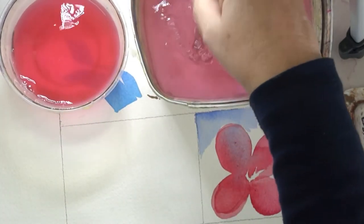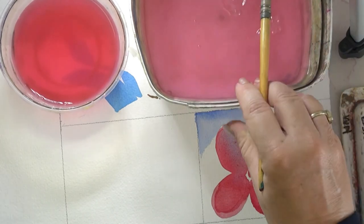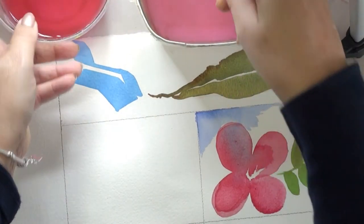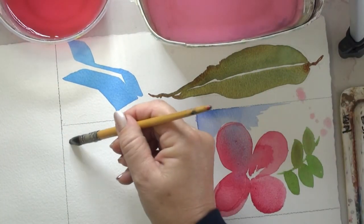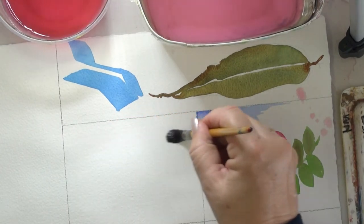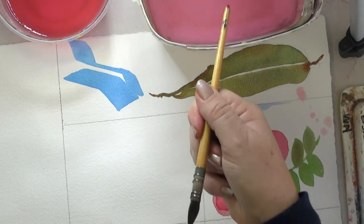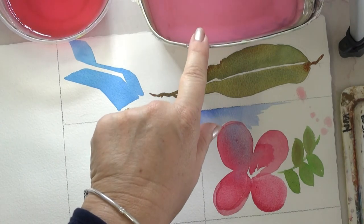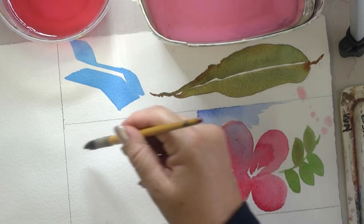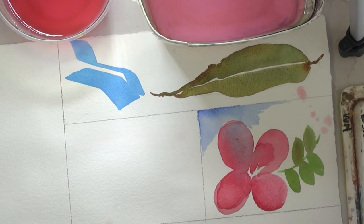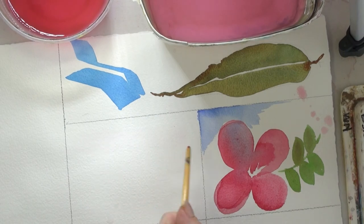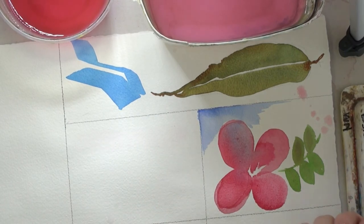Rinse the brush really well so that there's no crimson in it. And to test how dirty the water is, I'm going to paint a line across here. And you can really see my water is quite pink in the big container. But when I paint it on the paper it's non-existent.